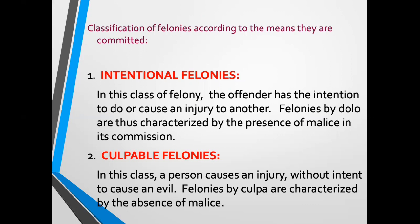On the other hand, in culpable felonies, the act or omission of the offender is not malicious. The injury caused by the offender to another person is unintentional and is simply the incident of another act performed without malice. As stated in Article 3, the wrongful act here results from imprudence, negligence, lack of foresight, or lack of skill. In intentional felonies, the wrongful act results from malice; in culpable felonies, it results from imprudence, negligence, lack of foresight, or lack of skill.